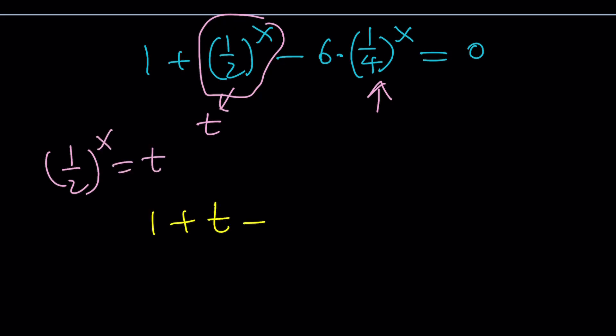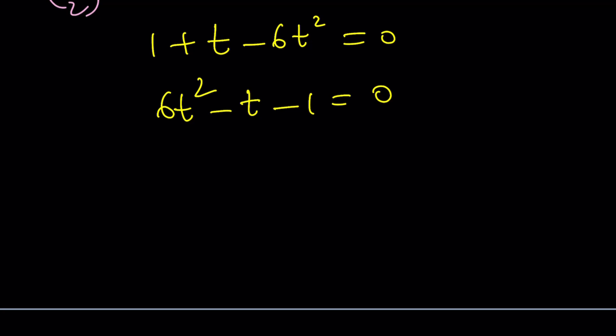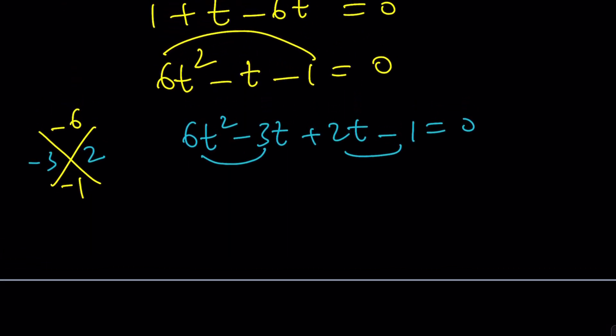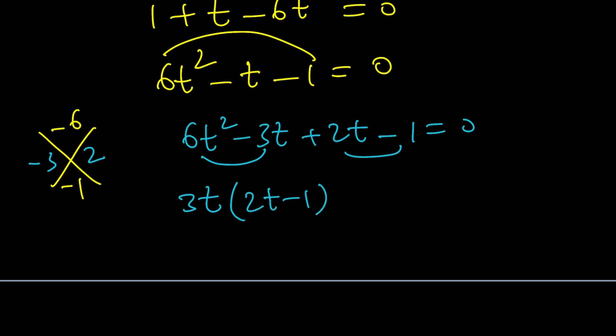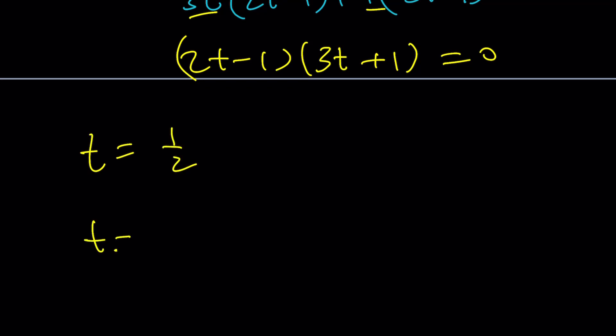We get 1 plus t minus 6t squared equals 0. Multiply everything by negative 1 to fix the leading coefficient. Do you think this is factorable? I think so. Maybe we can try the x method. 6 times negative 1 is negative 6, and the sum is negative 1. Can you find two numbers whose product is negative 6 and whose sum is negative 1? Yes, negative 3 and 2. So now we can split this. We take out 3t and get 2t minus 1 plus 1 times 2t minus 1. We put a 1 there for convenience. Now we have a common factor: 2t minus 1 times 3t plus 1 equals 0.